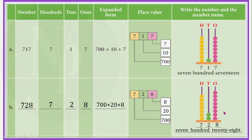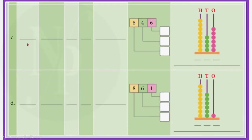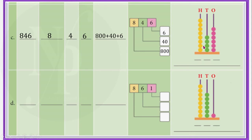Similarly, let us complete C and D in this table. For C, the number is 846. We should write 846 here. It has 8 hundreds, 4 tens and 6 ones. Expanded form of 846 is 800 + 40 + 6. The place value of 8 in 846 is 800, and the place value of 4 is 40. Place value of 6 is 6 since it is in the ones place. Looking at the abacus, there are 8 beads on the hundreds rod, 4 beads on the tens rod, and 6 beads on the ones place rod. The number name is 846.